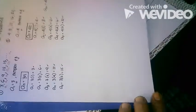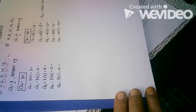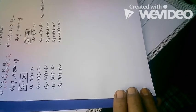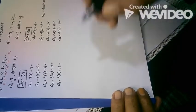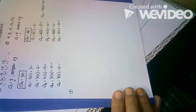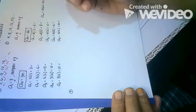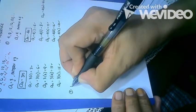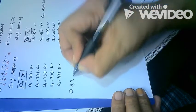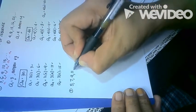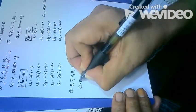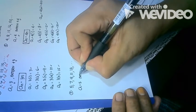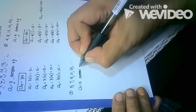But what if the pattern of adding is not equal to the first term a sub 1? Example number three: the sequence is added by 2 but starts with 5 — so 5, 7, 9, 11, 13, and so on. Take note: a sub 1 is 5 and the pattern is adding by 2.